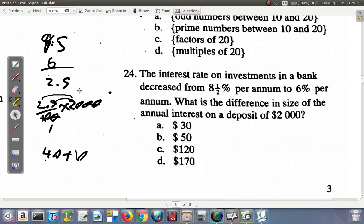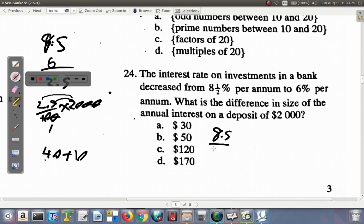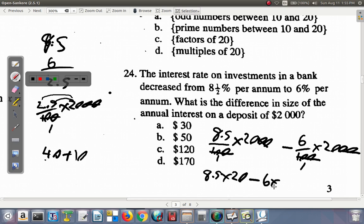If you wanted to work each percent separately, then you just say 8.5% per annum. Remember, per means out of, 100 means 100, of means multiply. Of 2,000, and you're going to minus 6% of 2,000. So you really have 8.5 times 20 minus 6 times 20. But then, of course, it factorizes back to 20 outside the bracket, 8.5 minus 6, which goes back to what we had done before.